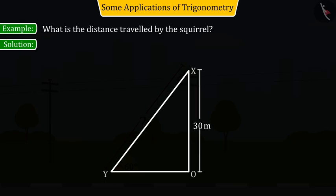This is the place from which the squirrel climbs upwards, where XY is 60 degrees inclined to the horizontal plane, forming a right-angled triangle XOY.